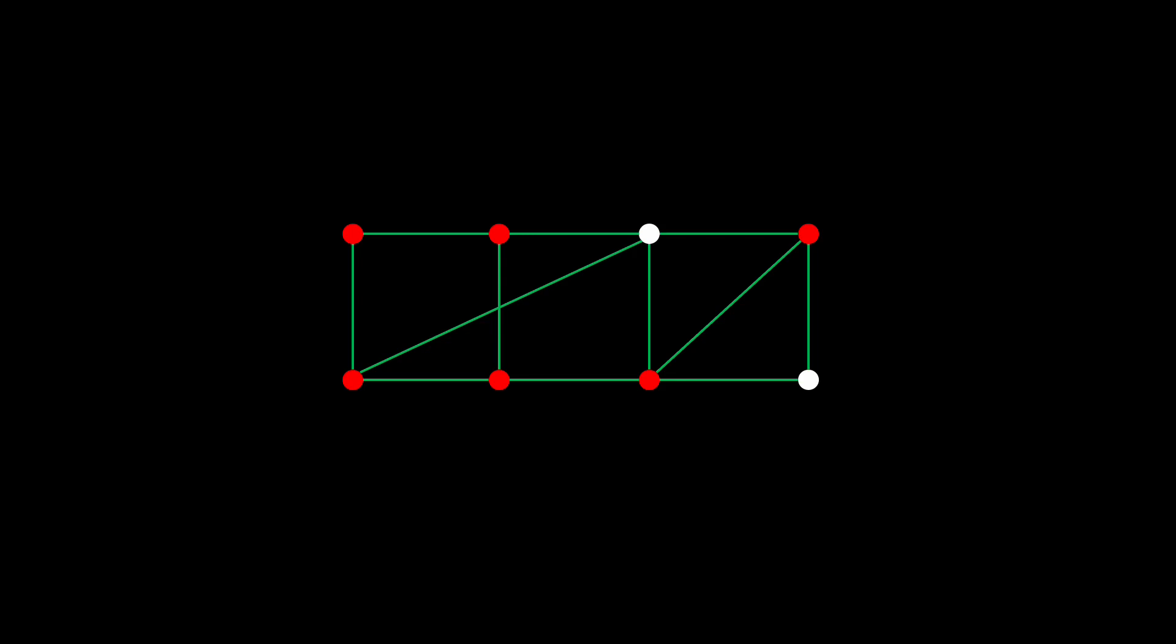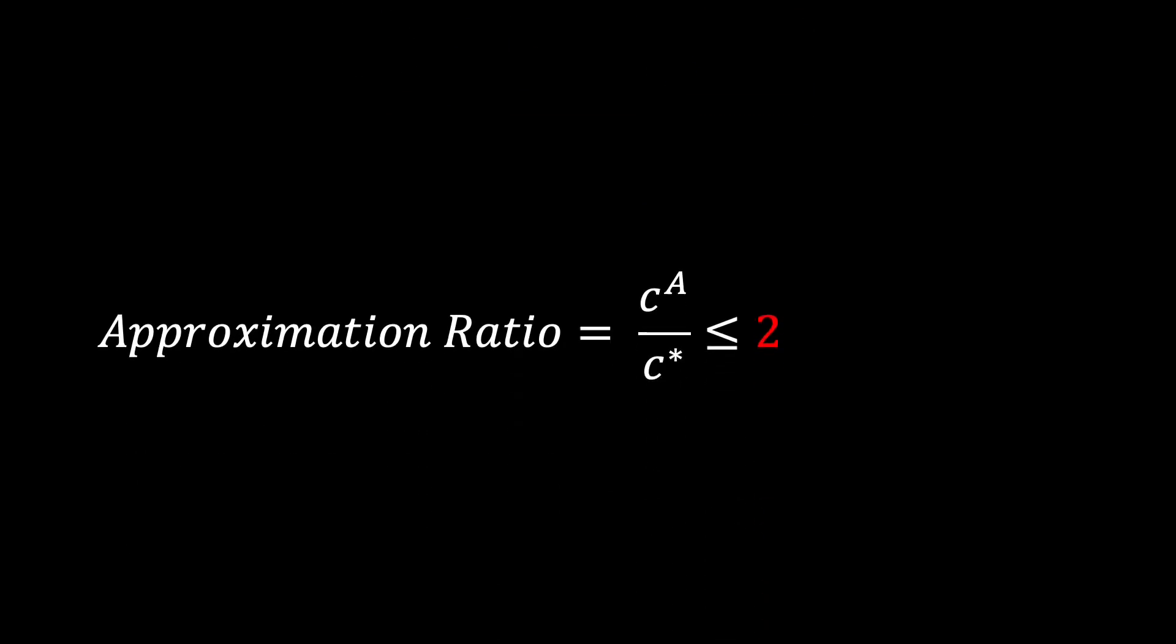Surprisingly, this algorithm gives us an approximation ratio of 2. Just as before, the algorithm clearly returns a correct vertex cover, since an edge is only removed from consideration once it is covered. But how about the approximation ratio?